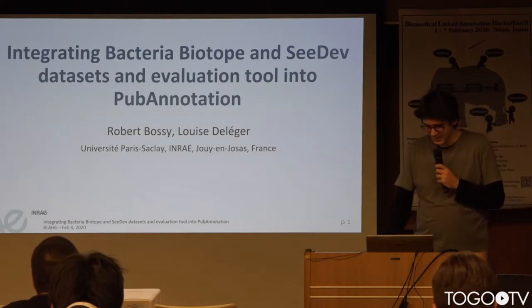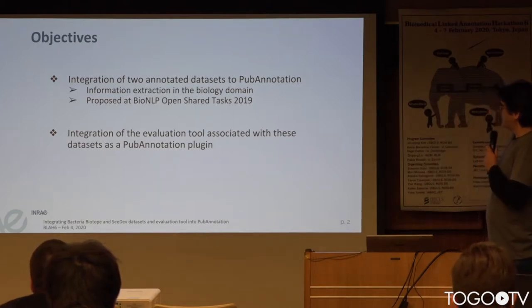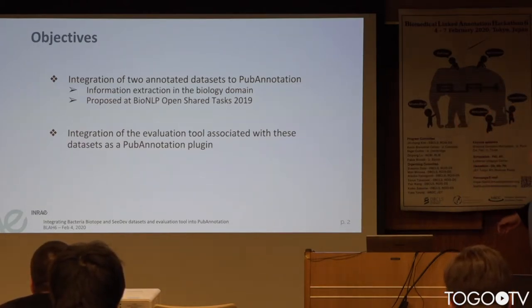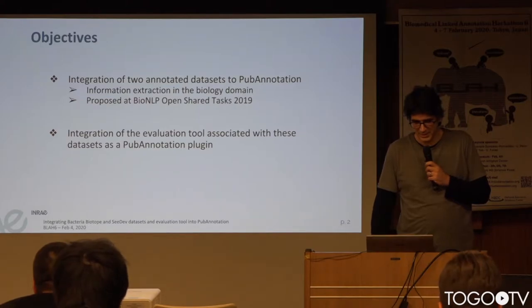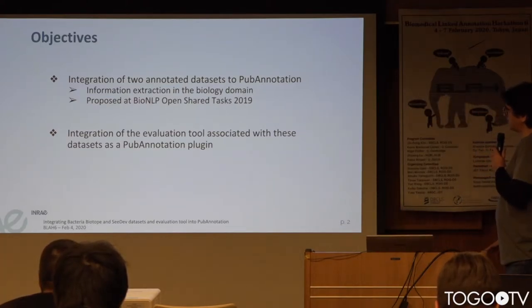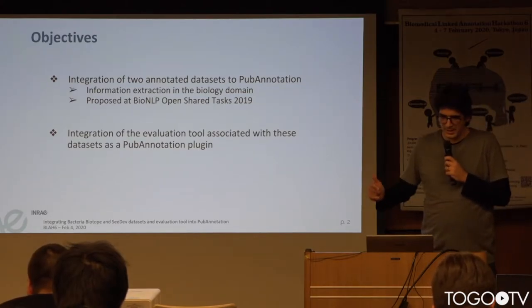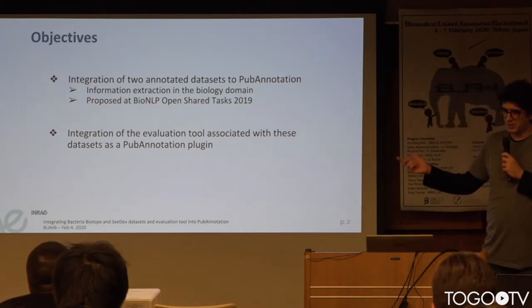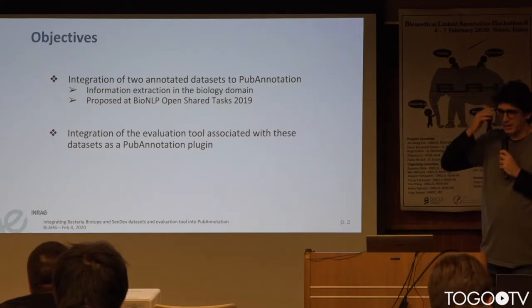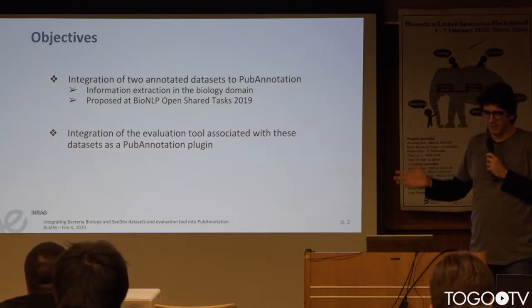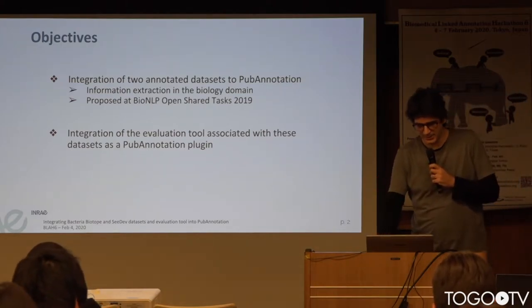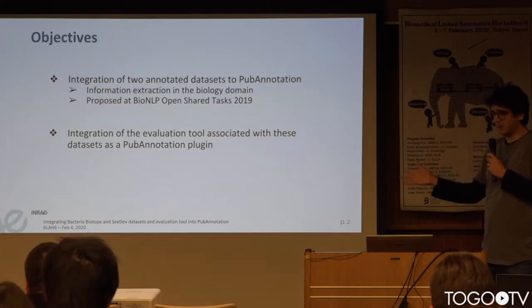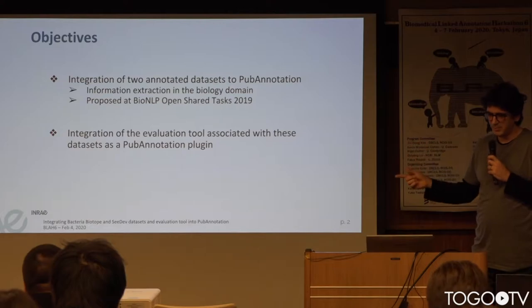The objective is to integrate manually annotated datasets that have been proposed to the BioNLP open shared task at the end of last year. These are shared tasks for information extraction in biology. The evaluation tool associated with both datasets we want to integrate as a PubAnnotation plug-in, because recently PubAnnotation has a framework to plug in external evaluators. We want to reach a wider audience and improve interoperability between our datasets and other datasets inside PubAnnotation.